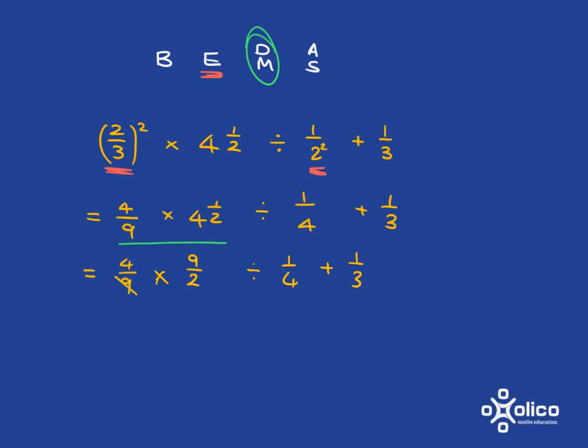So here, the 9s cancel and the 4 cancels with the 2, leaving 2 here. And so what you've got left is 2.